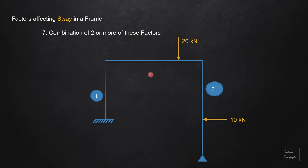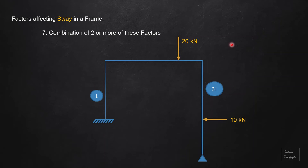Number seven is a combination of two or more of these factors. As you can see in this diagram, there is unbalanced horizontal loading, unsymmetrical vertical loading, unsymmetrical geometry, different end supports, and non-uniform section properties of the columns — all of this combined leads to it being a sway frame.